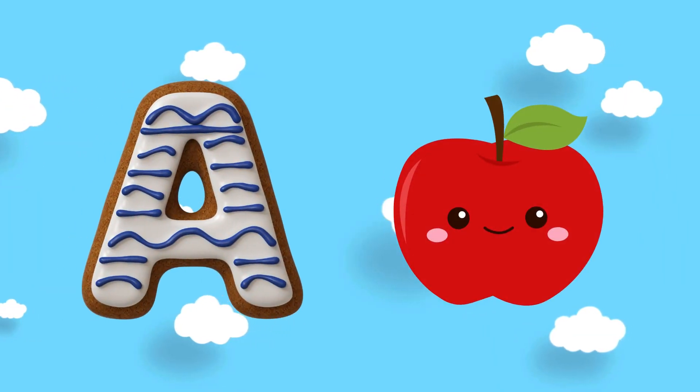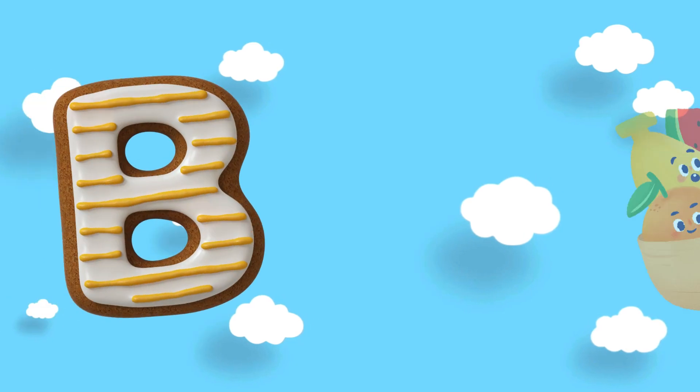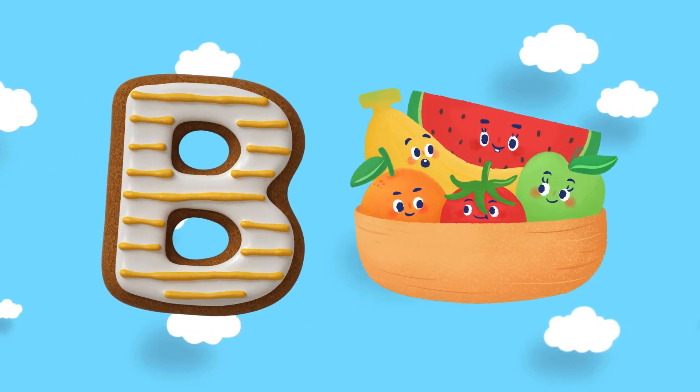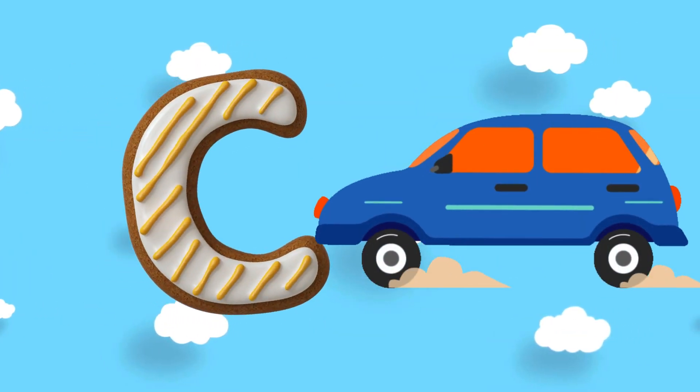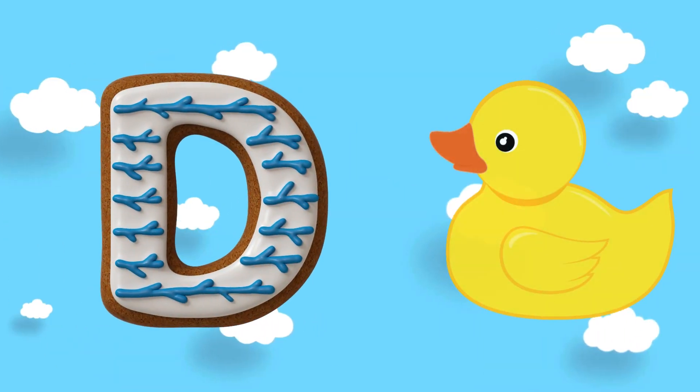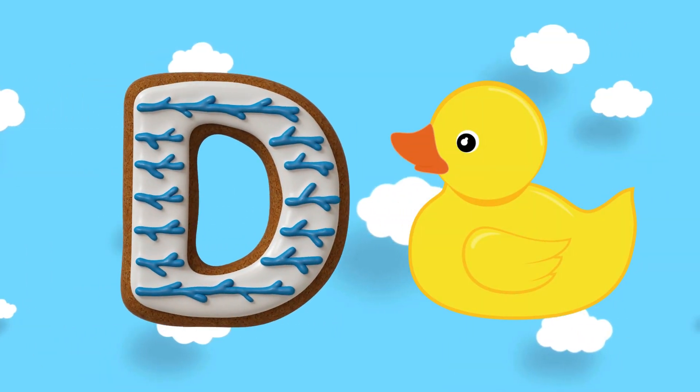A is for apple, B is for basket, C is for car, E is for duck.